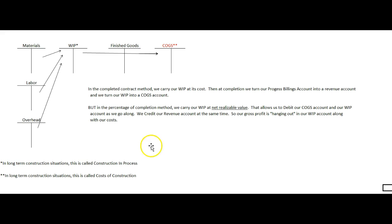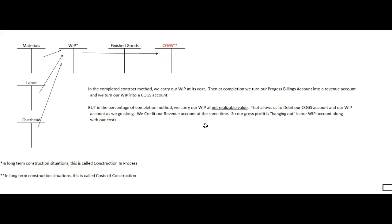A better way to go is to use the percentage of completion method. That allows us to book a certain percentage of our gross profit every year — if in year one we do 20% of the work, we should put 20% of the gross profit on our income statement. Under the completed contract basis everything hangs out on the balance sheet and finally goes to the income statement at the end. What we're going to do is stick into the work in process account, which we call construction in process, not just our costs but also our estimated gross profit. To make the journal entry balance, we also debit cost of goods sold for the percentage of work done and credit the revenue account for the percentage of revenue earned.